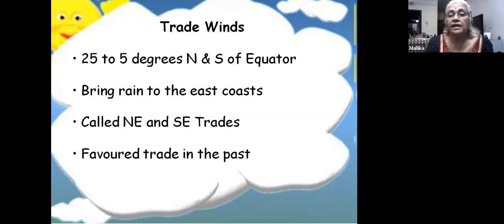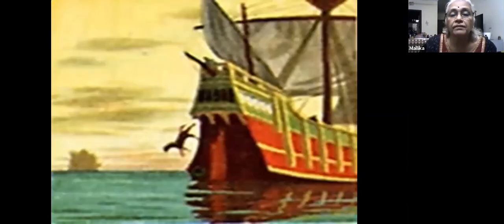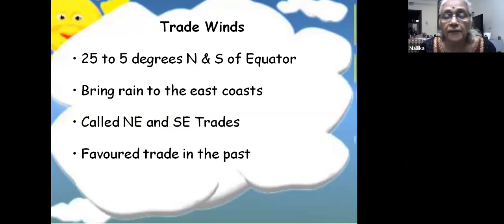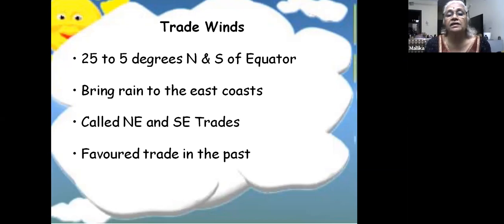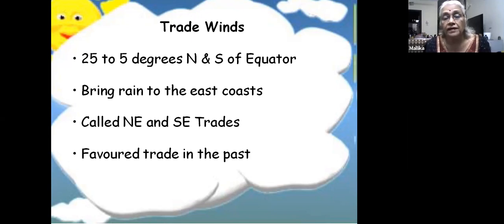These winds are called trade winds because they favored trade in the past. For a ship starting from England into the Atlantic Ocean, it would cross the equator. There was no Suez Canal at that time, so they would go right around South Africa, around the Cape of Good Hope. The Suez Canal was built much later.